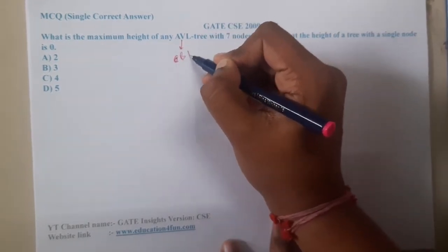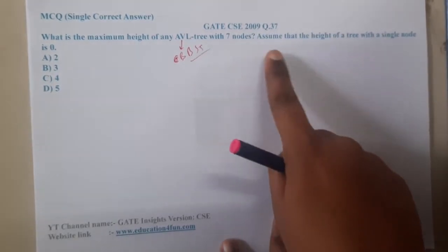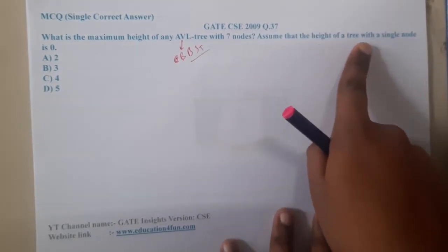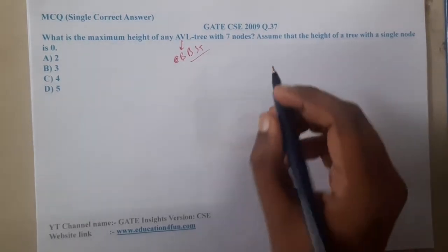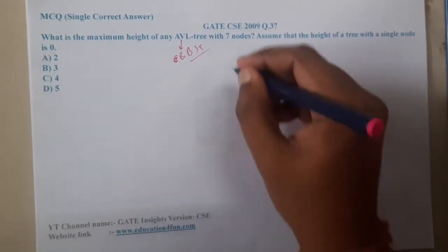An AVL tree is a balanced binary search tree with seven nodes, assuming that the height of a tree with a single node is zero. So the first node level is zero.